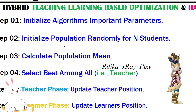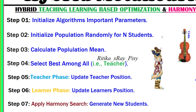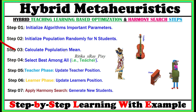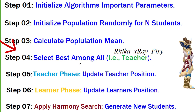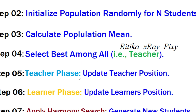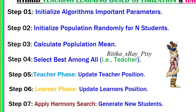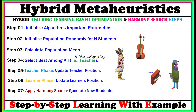After initializing parameters, we initialize the population for the agents in the search space. Suppose we have N agents — we will randomly initialize the population for the N agents in the search space. After that we calculate the population mean. Then in step 4, we select the best individual among all, which is considered as the teacher. In step 5 we update the teacher position, and in step 6 — the learner phase — we update the learner's position. In step 7 we apply the harmony search algorithm to generate new students or agents.